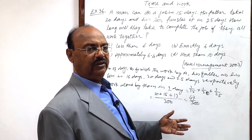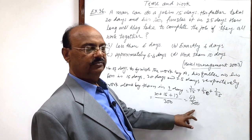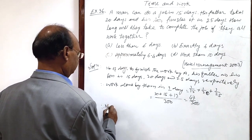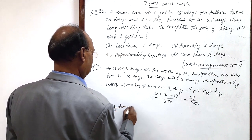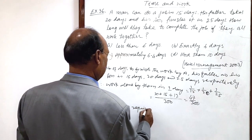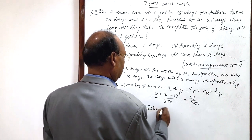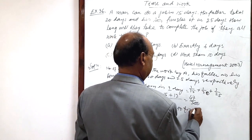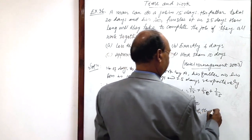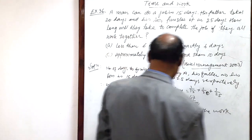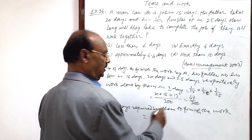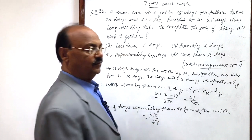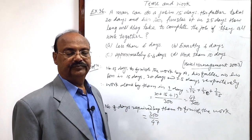Number of days required will be reciprocal of amount of work done. Therefore, number of days required by them to finish the work when they are working together is 300 by 47.